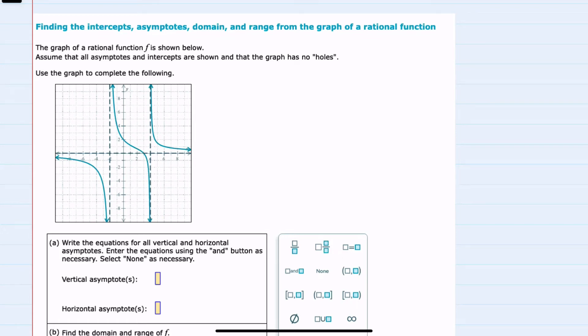In this video I'll be helping you with the ALEKS problem type called finding the intercepts, asymptotes, domain, and range of the graph of a rational function.